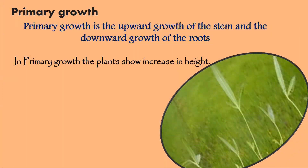Primary growth is the upward growth of the stem and downward growth of the roots. In primary growth, the plant shows an increase in height. Primary growth occurs due to cells which have the capability of division, present at the tip of roots and stem. All dicotyledonous plants and woody plants show primary growth in early age, then show secondary growth in later age.